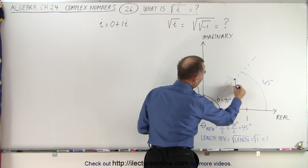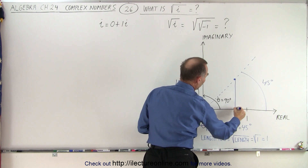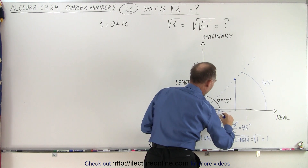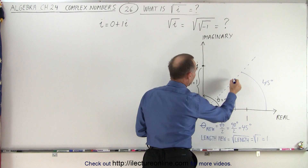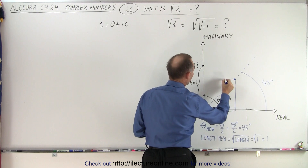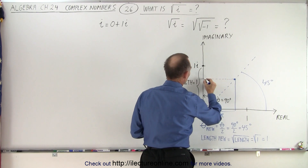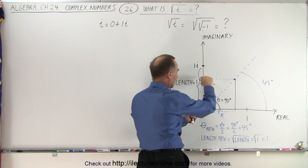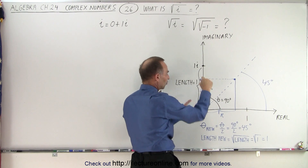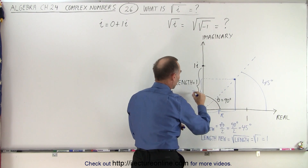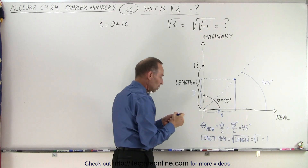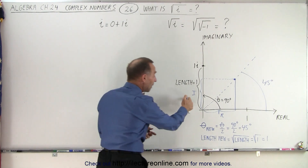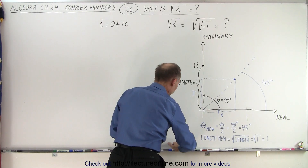So it will be somewhere over here, which means that the real part would be this value right here. This would be the real part and the imaginary part would be this value right here — at least that would be the magnitude of the imaginary part and the magnitude of the real part. So now how do we find the magnitude of these two?